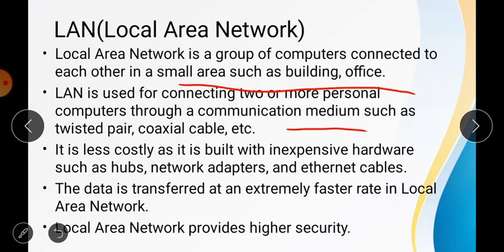LAN is a wired network — the computers are connected with the help of wires. You can easily see twisted pair and coaxial cable at your home. Twisted pair is made of two wires twisted together, usually green or black, or yellow or red. Coaxial cable can be seen in a dish TV connection — the wire that comes from the dish to your TV.